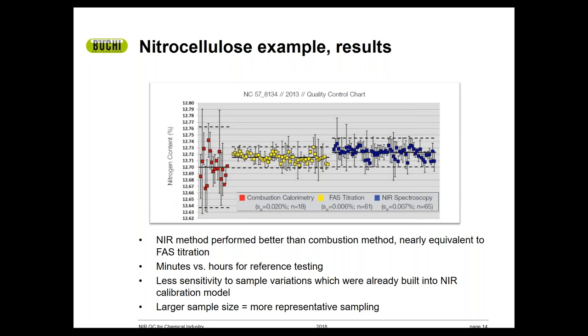The NIR method was also found to be more robust. By doing things like intentionally varying moisture in the calibration samples, the NIR model was less sensitive to moisture content than either reference method. And finally, the larger sample size of the NIR method enabled more representative sampling than either reference technique.